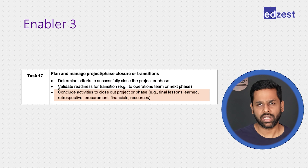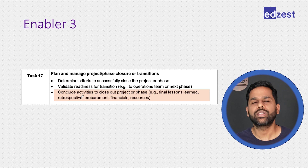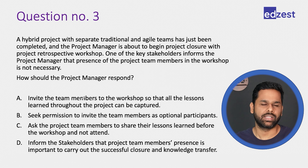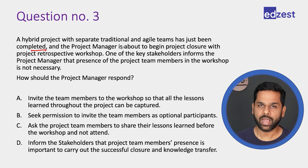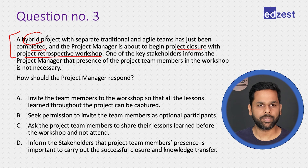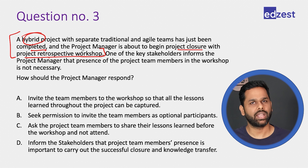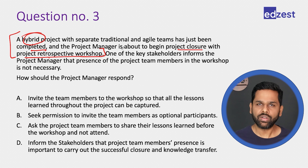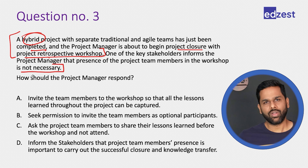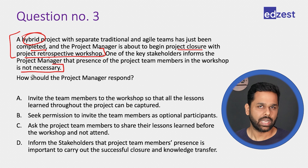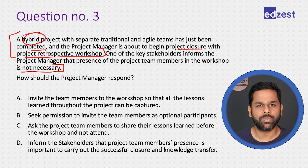Let us move to the next enabler, which is the last enabler for this task — concluding the activities to close out the project. A hybrid project with separate traditional and agile teams has just been completed. The project manager is about to begin the project closure with a project retrospective workshop. One of the key stakeholders informs the project manager that presence of the project team members in the workshop is not necessary. How should the project manager respond?